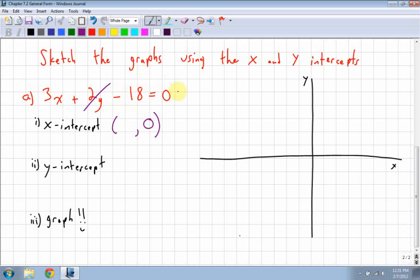I would solve, I would move the 18 over so I get 3x equals 18. Then I would divide by 3, so I get x is equal to 6. So my x-intercept is 1, 2, 3, 4, 5, 6.